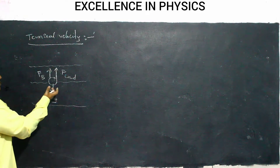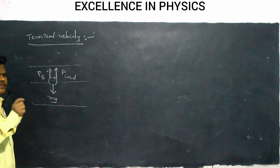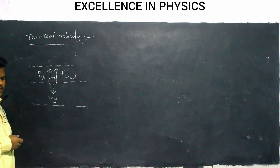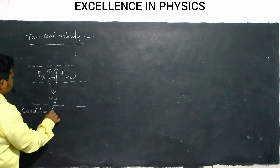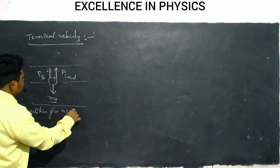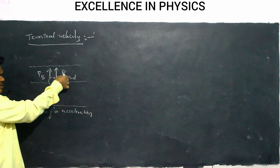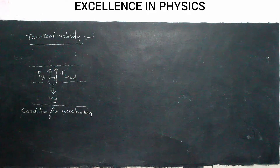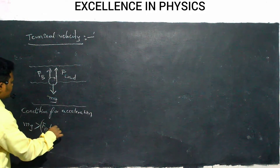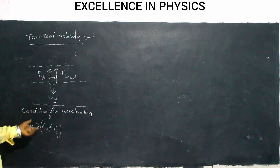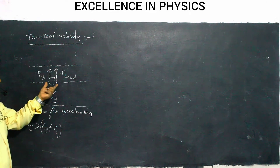In which condition will a body accelerate, and in which condition will it travel with the same speed? The condition for acceleration: when mg is greater than the force of buoyancy plus the force of friction, then the body will accelerate in the downward direction.